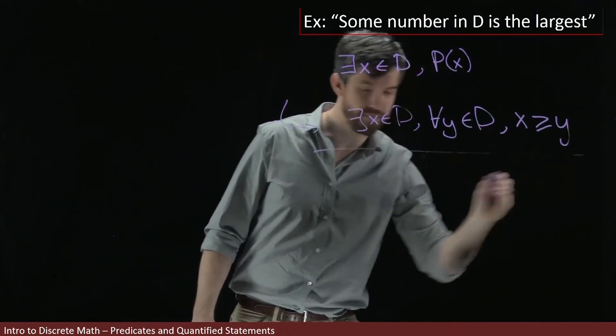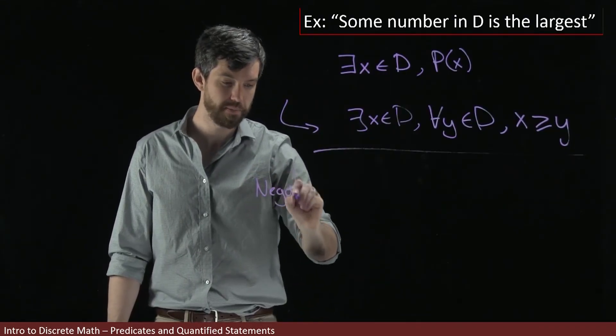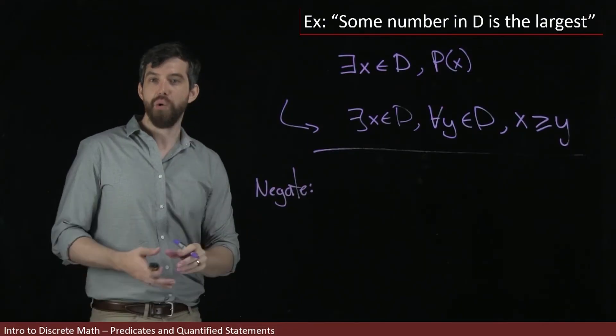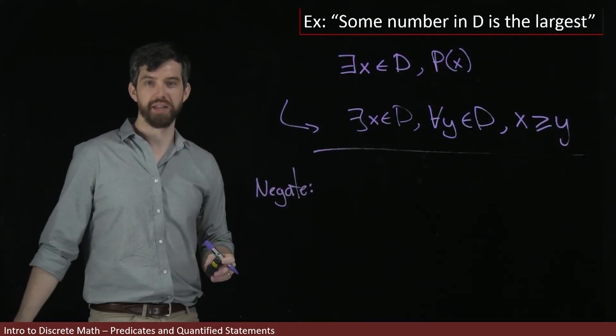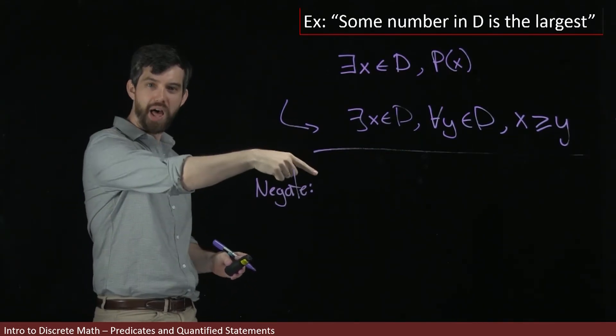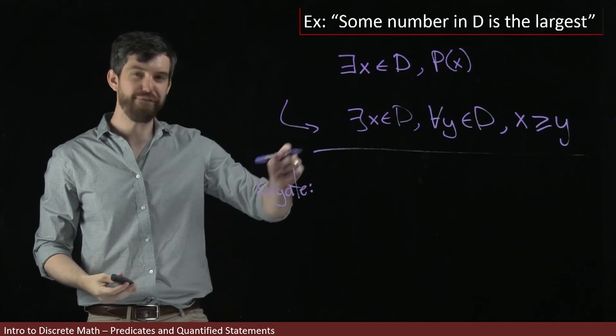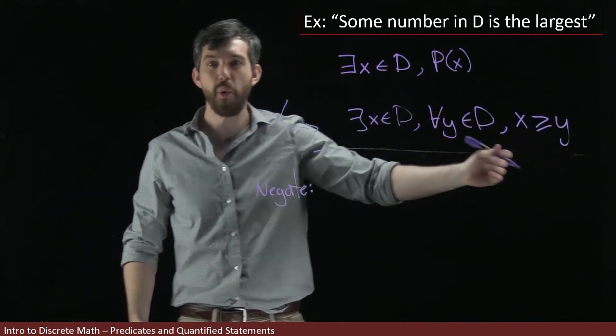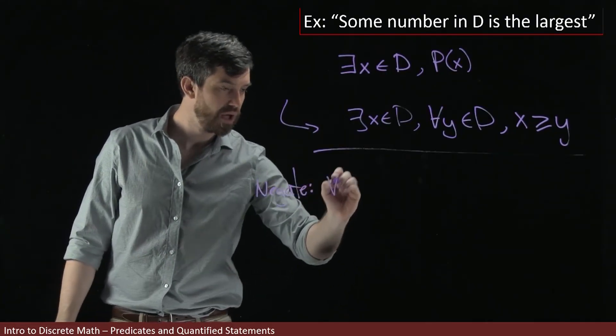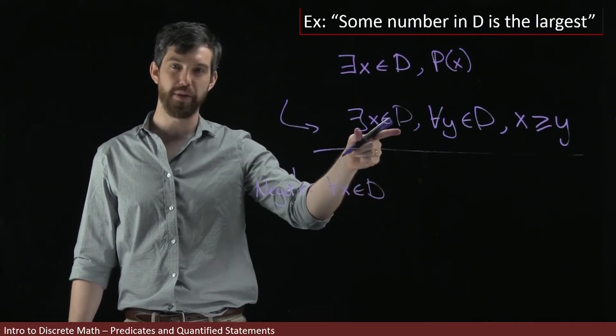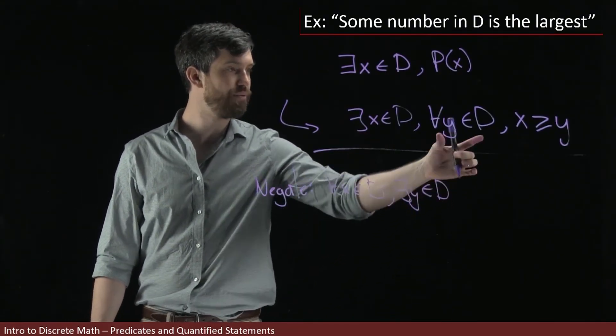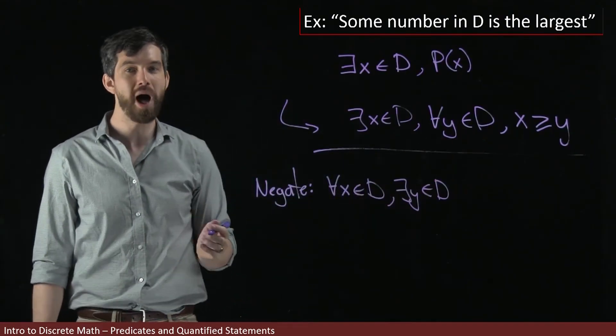We know how negation works by this point. Every time I see a there exists or a for all, I just keep flipping them down the line. And at the final time, when I get to a statement like x is greater than y, I negate that. So this becomes for all x in the domain, flipping my there exists. There exists a y inside the domain, flipping my for all y.